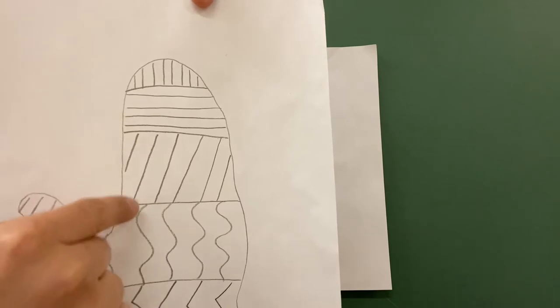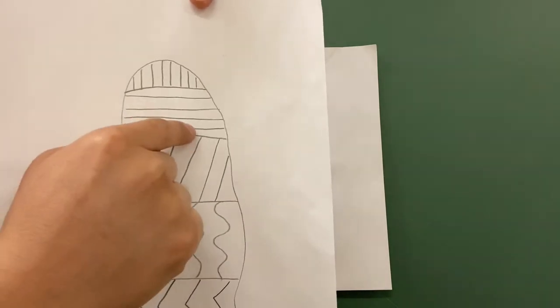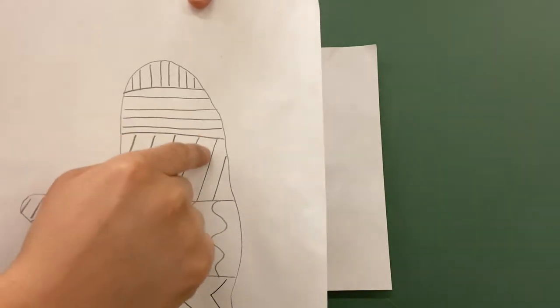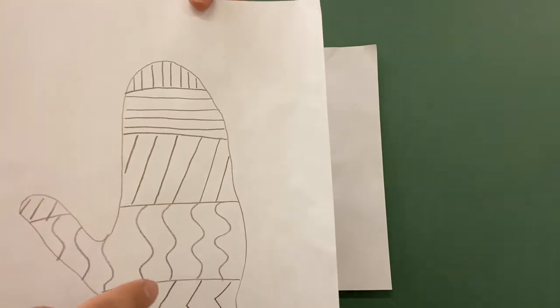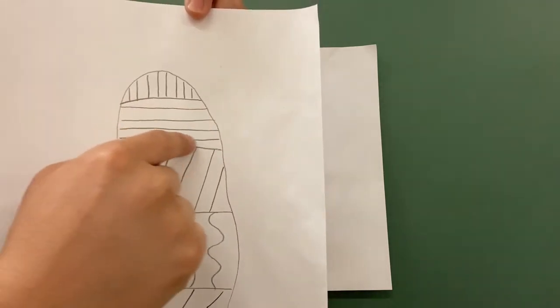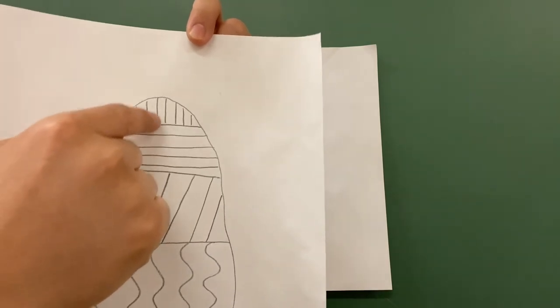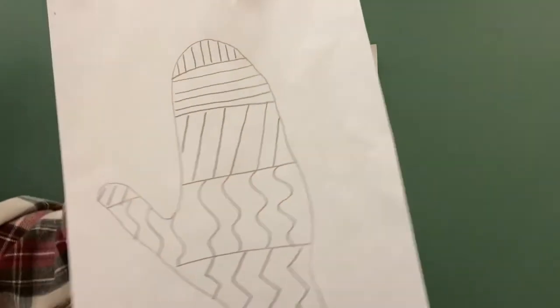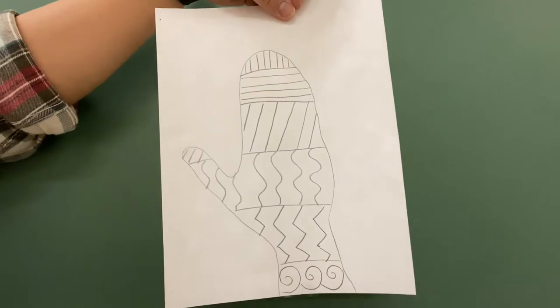These ones up here are a little bit more difficult to define. They're called diagonal lines. These lines here are called horizontal lines and these lines here are vertical lines. We'll go over that as we draw our winter mitten.